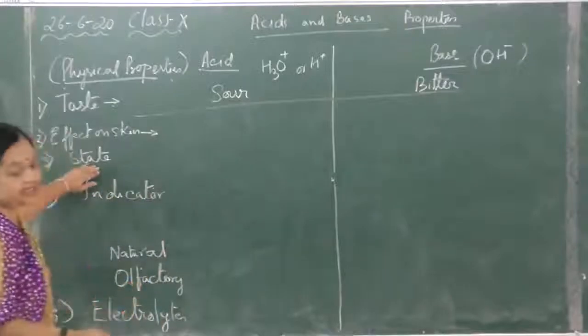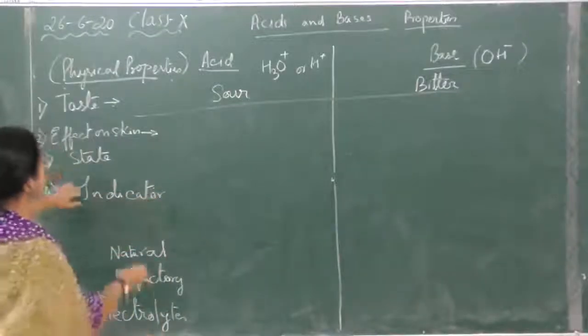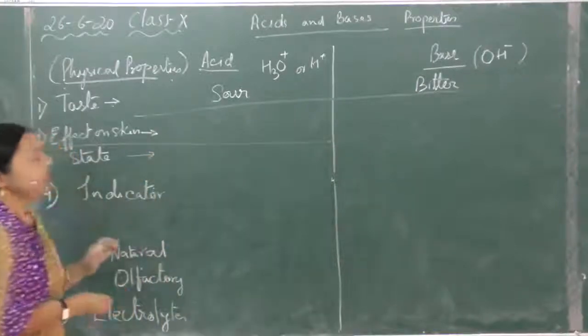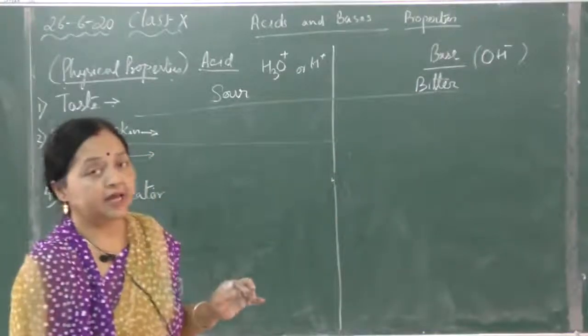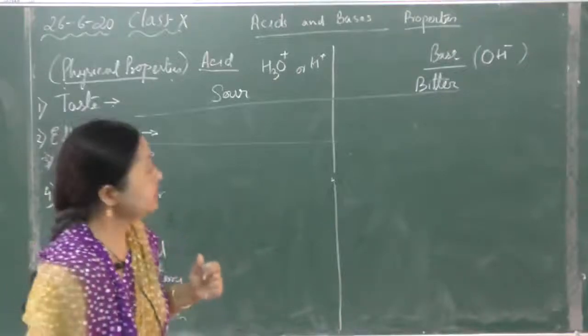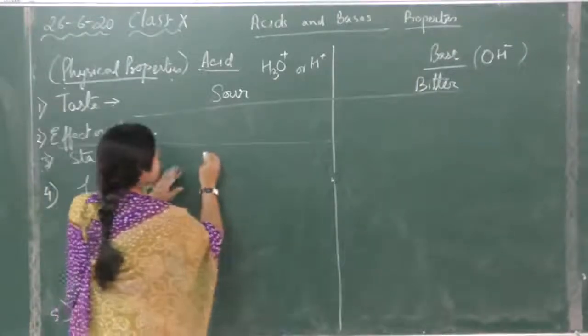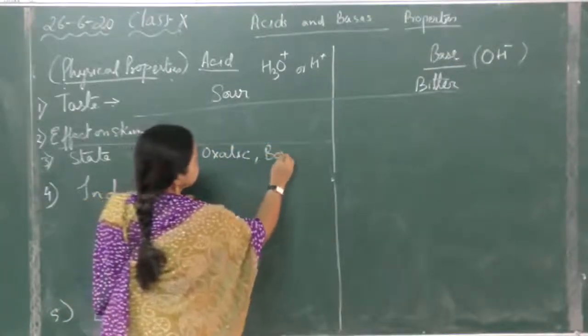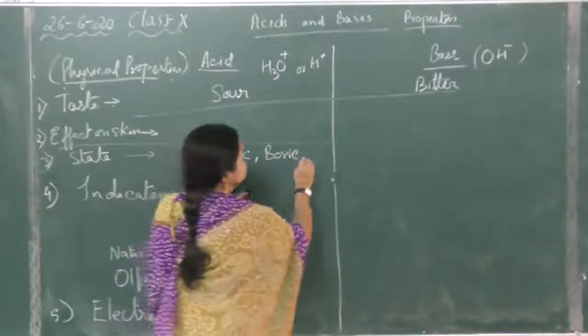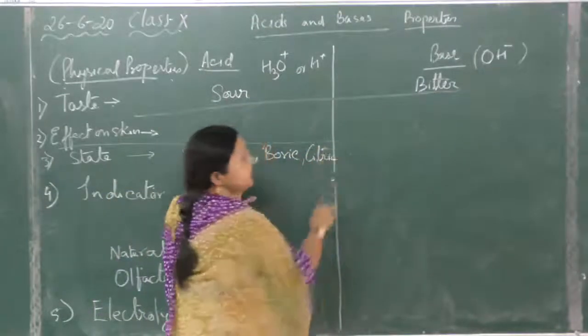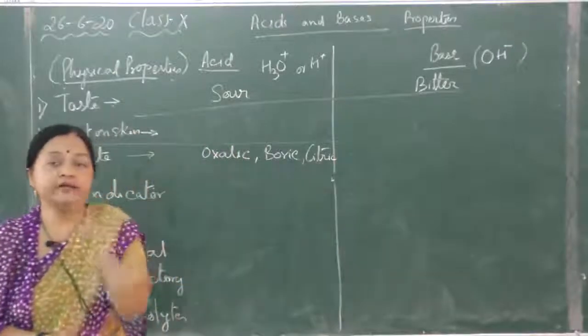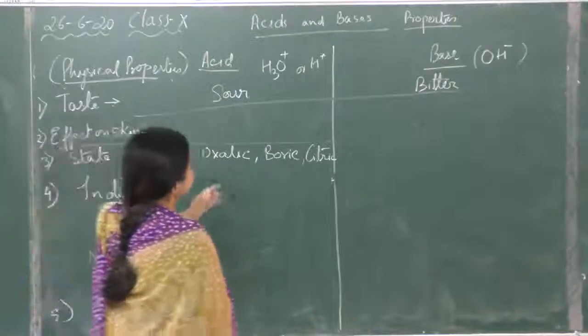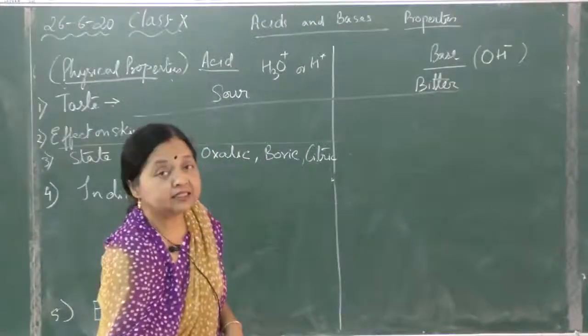Then we come to the state. State can be solid, can be liquid. Solid state, for example, oxalic acid, boric acid, citric acid, phosphoric acid, these are all solid acids. Among liquid acids you have volatile and non-volatile acids.